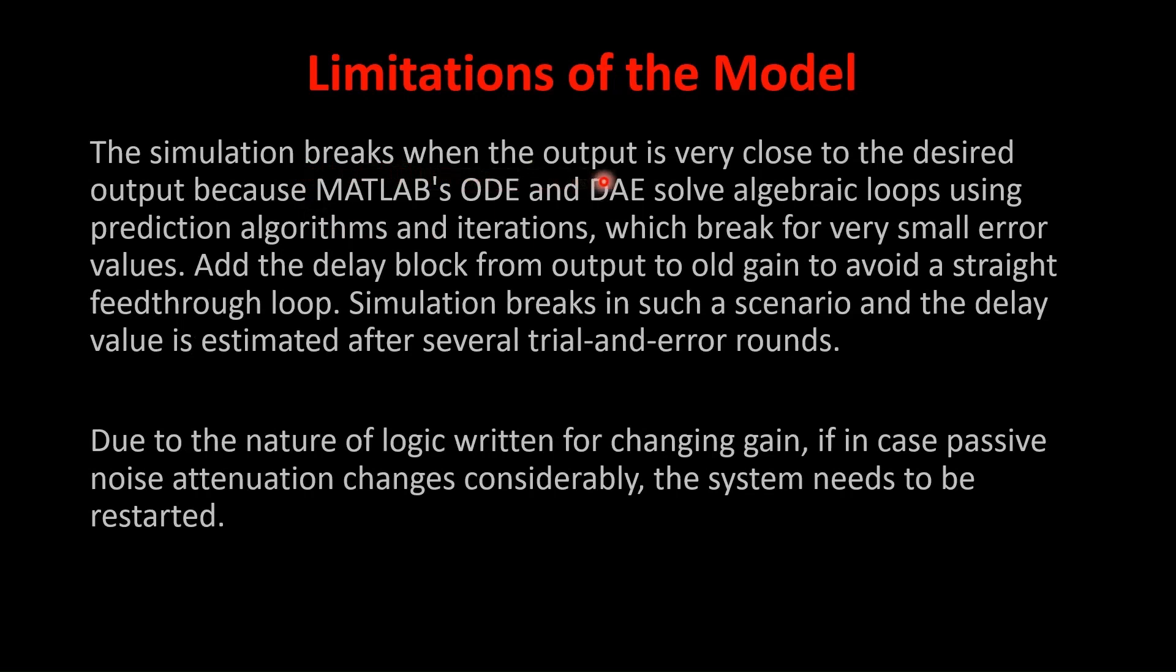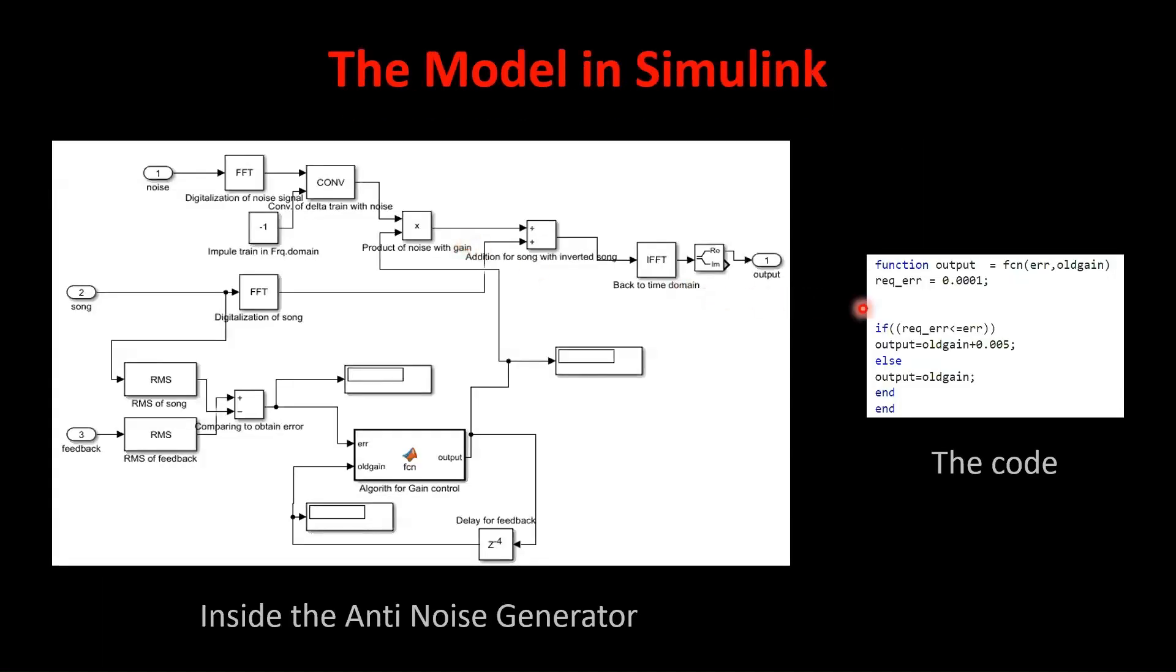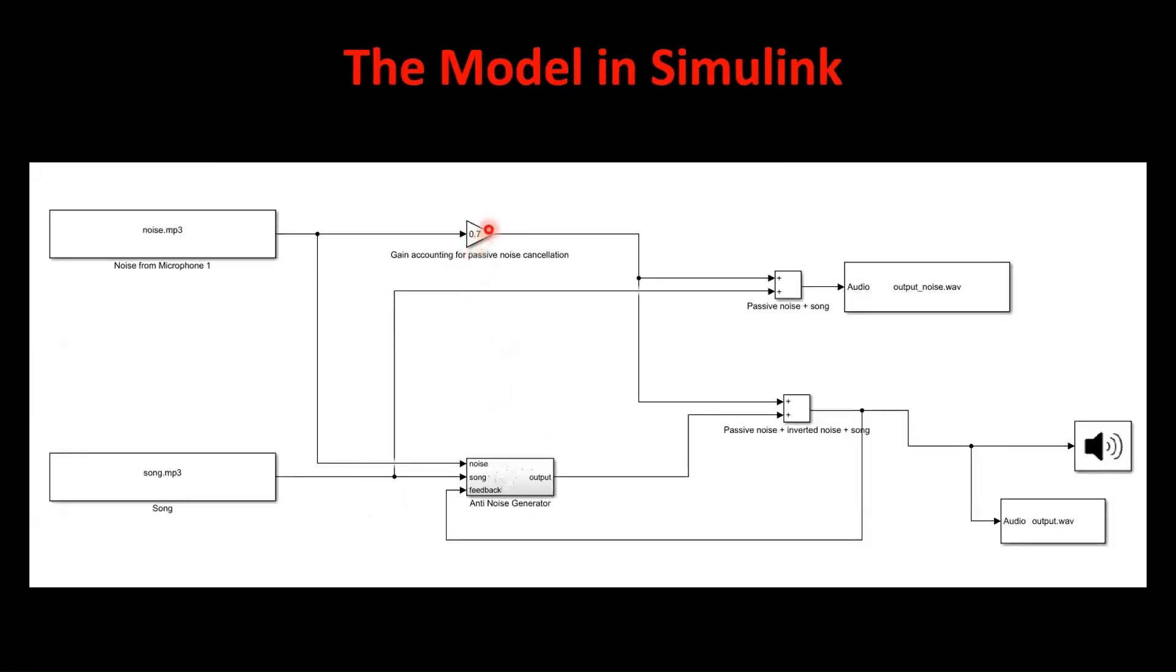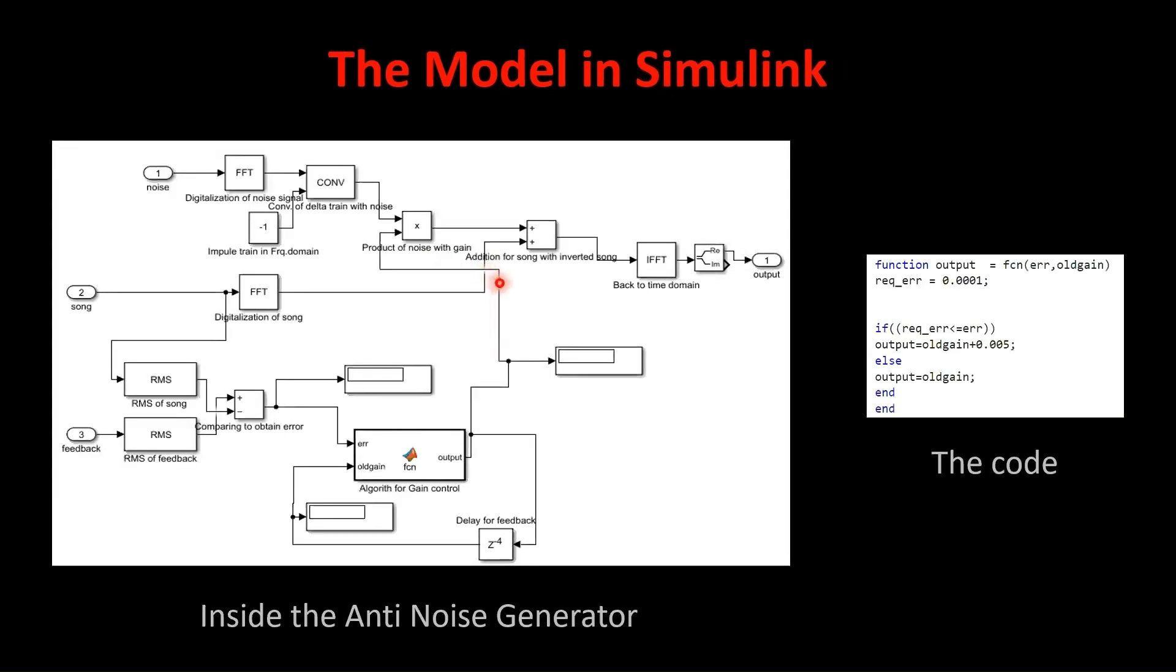Now, the error and the limitations of our model. The simulation model breaks when the output is very close to the desired output because MATLAB's ODE and DAE solve algebraic loops using prediction algorithms and iterations, which break for very small error values. So here the error we are comparing was 0.0001. If error is anywhere near this, algebraic loop, that is this small feedback loop, breaks off. We also add the delay block in the feedback loop to avoid a straight feedthrough loop. And one more thing is due to the nature of logic written for changing gain, if we change this passive gain then we need to restart this whole program again for it to work. It doesn't dynamically change.